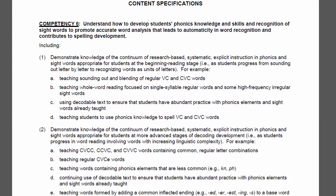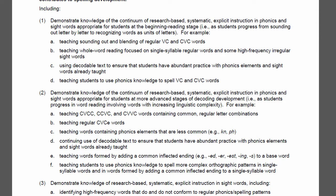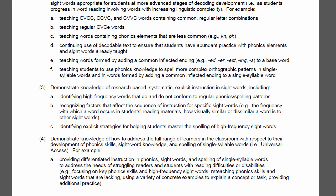Competency six is about automatic word recognition. Really reading over all of these descriptors is incredibly helpful. If you don't have any idea what a VCCVC is — vowel-consonant-consonant-vowel-consonant — you probably want to learn what that is, along with segmenting, sounding out and blending, for example. So spend some time in here so you can get an idea of what's going on.